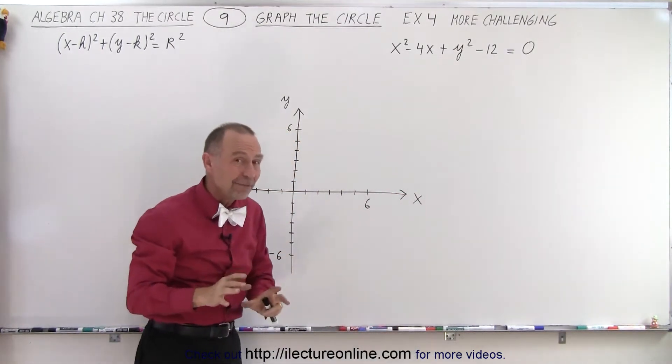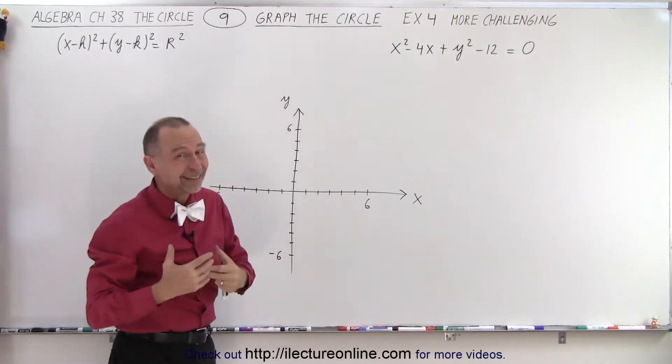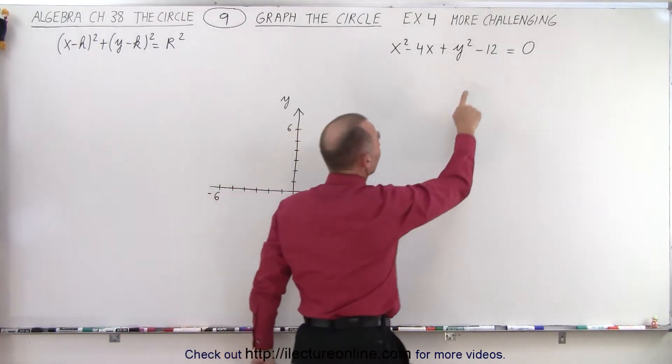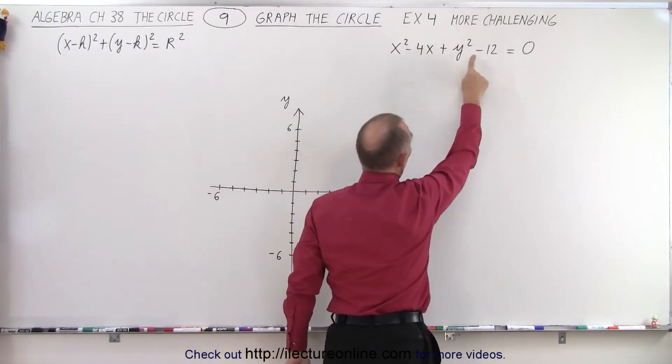If those coefficients are the same, in this case they're 1, it's likely a circle. Notice we don't have a y-term. We do have an x-term, but not a y-term.